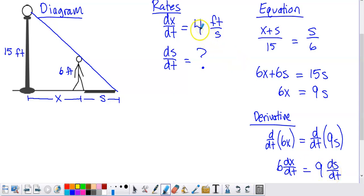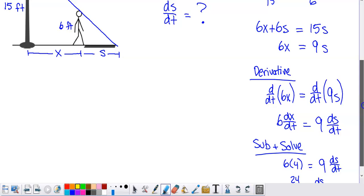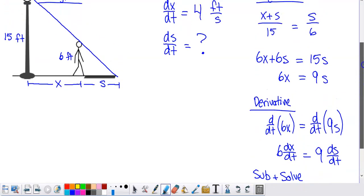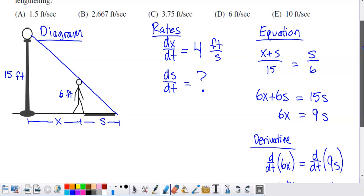Now what I have the opportunity to do is take 4, put it in place of dX/dt. So when I do that, 6 times 4 is going to give me 24 on the left-hand side. Divide that by 9, and you should be able to match that up with one of the options.